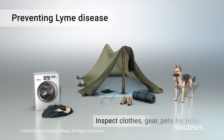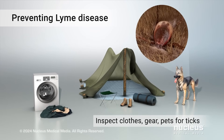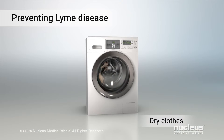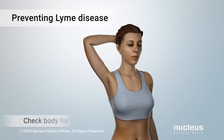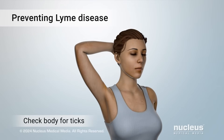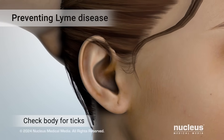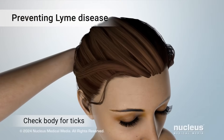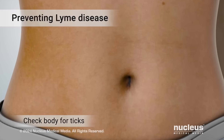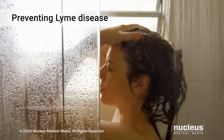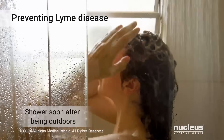After returning from these areas, inspect your clothes, gear, and pets for ticks. Put your clothes in a dryer on high heat for at least 10 minutes to kill any ticks on them. Use a mirror or have someone help you check for ticks on your body: under your arms, in and around your ears, in and around your hair, around your waist, in your belly button, and between your legs. And take a shower within two hours after returning from outdoors.